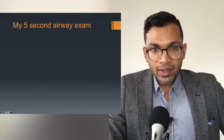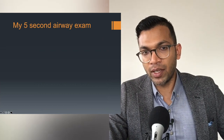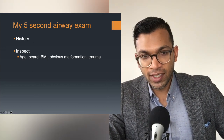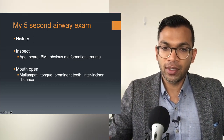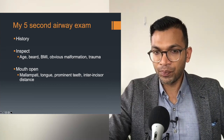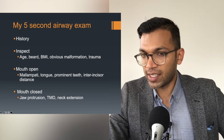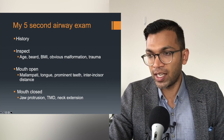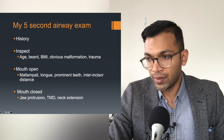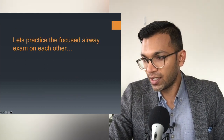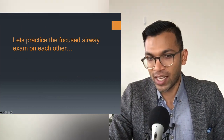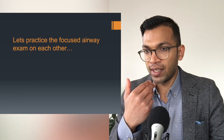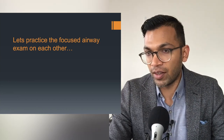The five-second airway exam: take a history to check for previous indicators; inspect for age, beard, BMI, obvious malformations, trauma — all the CANDI factors. With the mouth open, check Mallampati score, large tongue, prominent teeth, and inter-incisor distance. With the mouth closed, check jaw protrusion, thyromental distance, and neck extension. As you gain experience you'll be able to assess all anatomical pathways for intubation just with that examination. Now turn to your partner and practise the airway exam on each other.